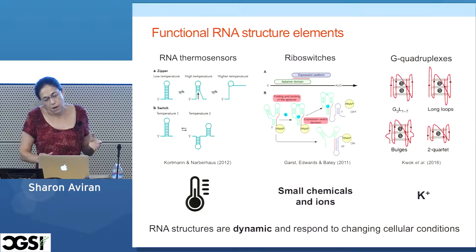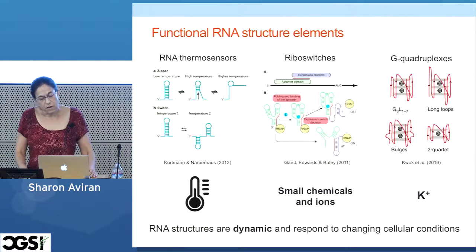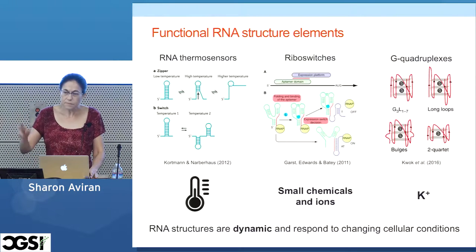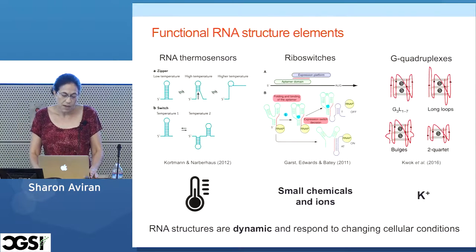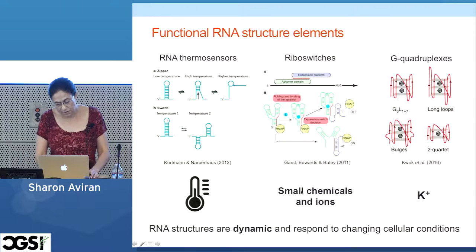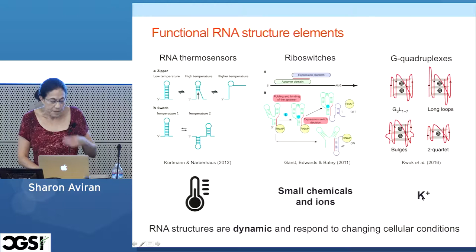What's also common to all three families is that they demonstrate very well that RNA structure is dynamic. You don't just freeze a structure in a certain conformation — these things change all the time. When the cellular environment changes, they change too: in the case of thermosensors it's temperature, for riboswitches it's certain ligands, and for G-quadruplexes, for example, it's potassium ions. We're going to talk a lot about dynamic RNA structure.